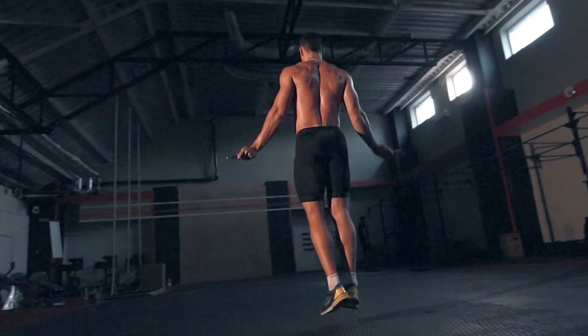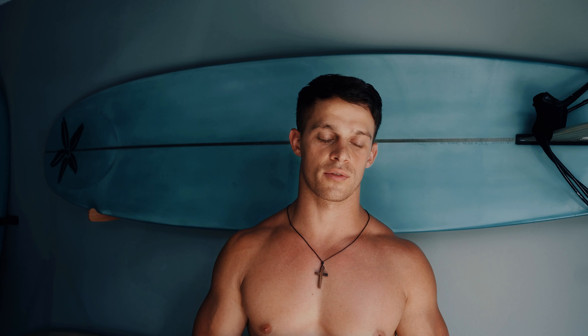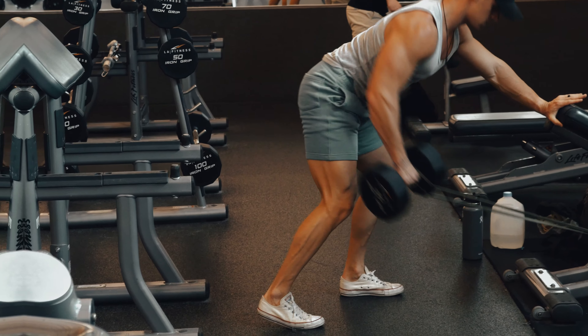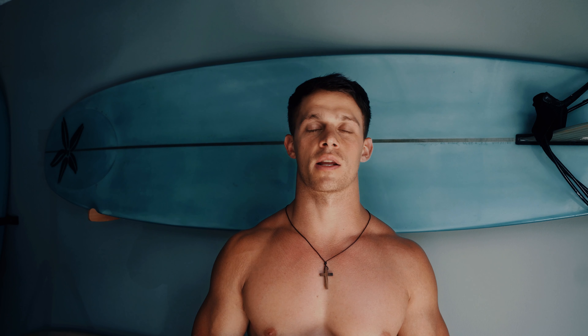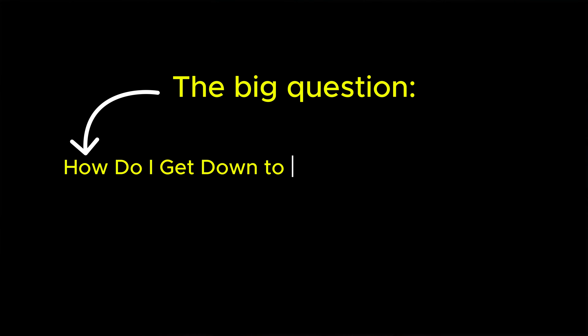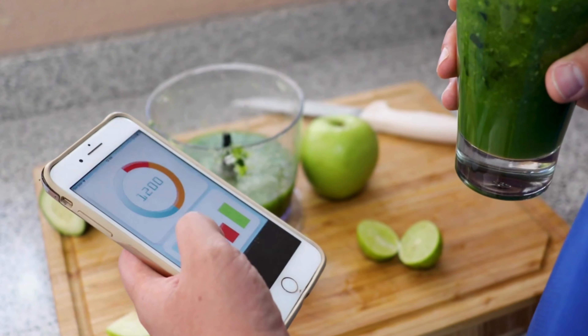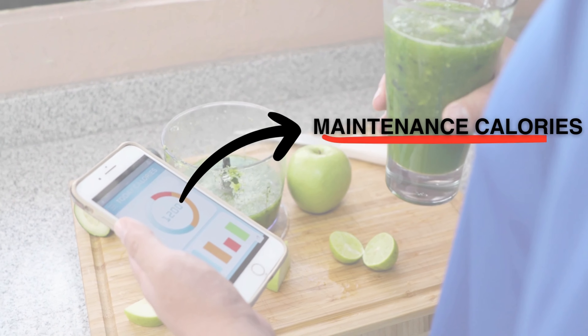What is an ideal body fat percentage? Depending on your genetics and activity level, it's going to be different from one person to the next. But from experience, the target range is probably going to be somewhere around 10 to 12% body fat. If you're sitting at a really high body fat percentage and want to get down to that optimal range, here's exactly what I would do.